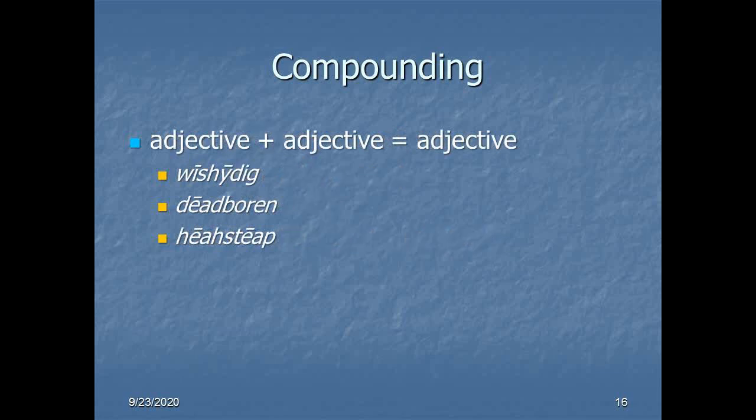Another word formation strategy that the Anglo-Saxons used was simply combining two adjectives to make a new adjective. So, take a look at these three. Weezheede, Dädboren, and Hechsteep. Of those three, I suspect Dädboren is the one you're most likely to have an intuitive grasp of. Although the element Weez in Weezheede might give you a clue there. Hechsteep is just a fun one. So, Weezheede is simply wise-minded. Heed is a word associated with thinking, with the mind. Weez, of course, is wise. Dädboren hasn't really changed all that much. Boren is just born. Dädborn, literally, stillborn. So, that's very close to its old meaning. Hechsteep is a wonderful one, isn't it? Hech is simply high, and steep is where we get our word steep. So, it's literally high-steep, but very high is what it means.